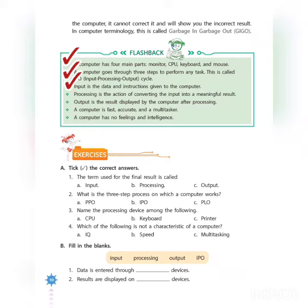Number 3. Input is the data and instructions given to the computer. Processing is the action of converting the input into a meaningful result. Output is a result displayed by the computer after processing.